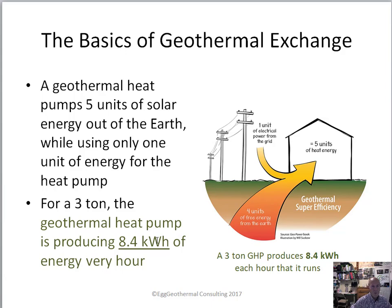In the basics of a geothermal heat pump — and this will apply to air source also — a geothermal heat pump uses one unit of electricity from the grid to pump roughly four units of free energy from the earth. This is depicting a heating mode. When you add those four units of energy to this one unit of electricity, the heat pump is able to deliver a grand total of five units of energy. In this three-ton heat pump example, a three-ton heat pump can produce 8.4 kilowatts of heat every hour it runs.